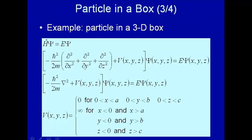We're going to make the same kind of potential: anywhere inside the three-dimensional box — with dimensions a, b, and c — the potential is zero, and anywhere outside the box it is infinity. So the particle is constrained to be in this three-dimensional box, and the Hamiltonian consists only of the kinetic energy operator.